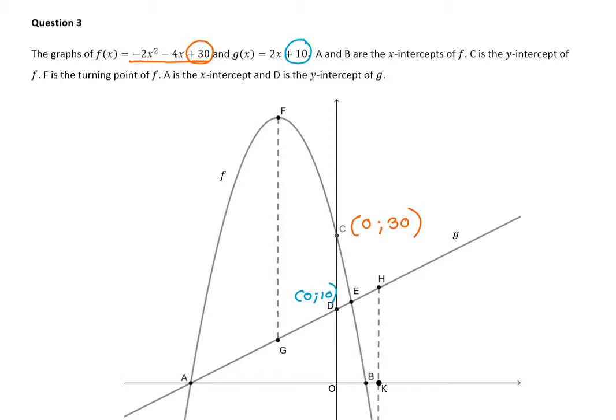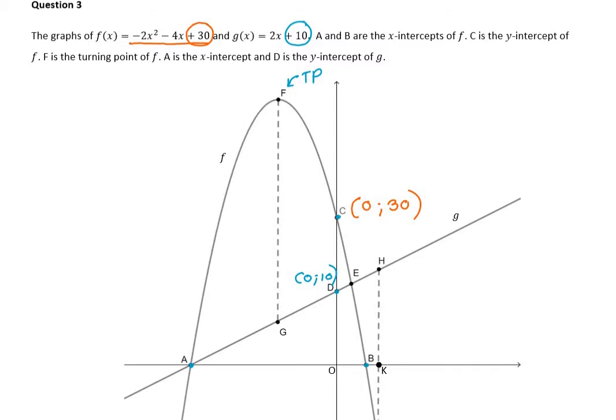Then it says a and b are the x-intercepts of f. Okay, that's quite nice. c is the y-intercept of f, which I'd already assumed, to be honest, which is a terrible thing to assume. And f is the turning point. Okay, so that's good to know. a is the x-intercept of d, of the straight line, and d is the y-intercept. Right, moving on.